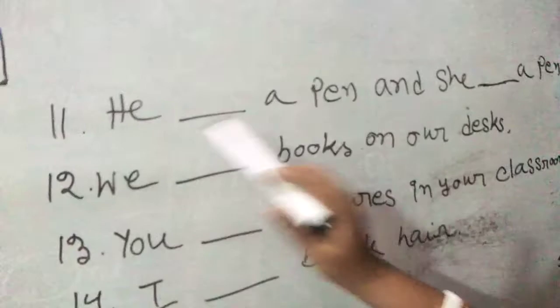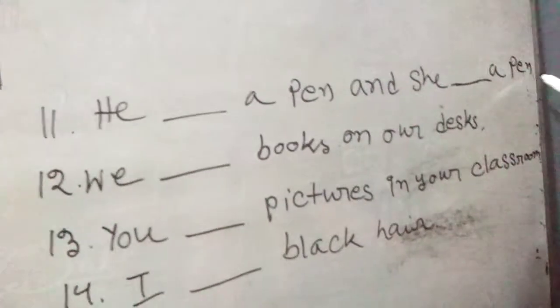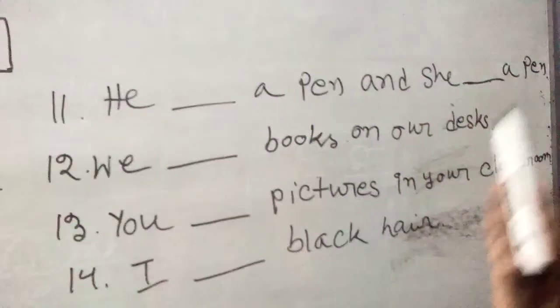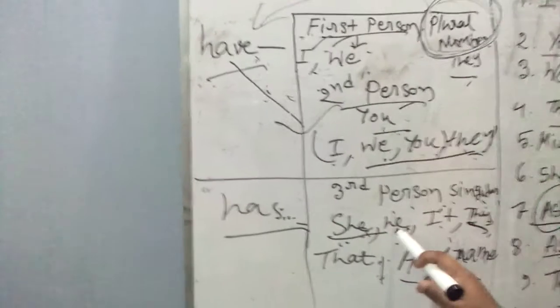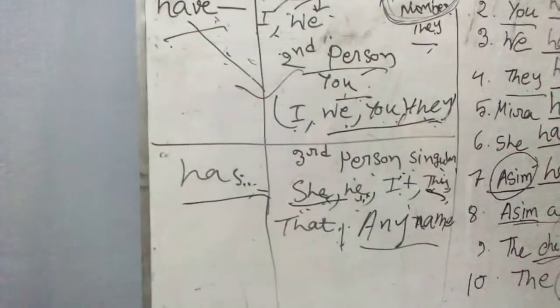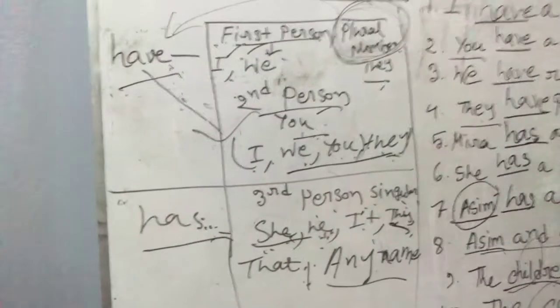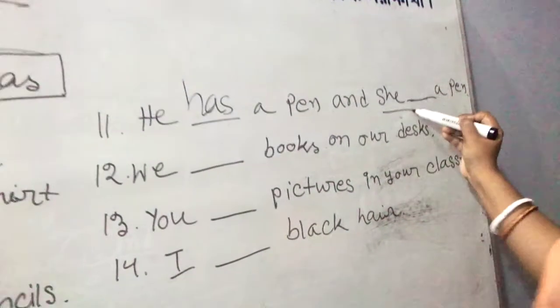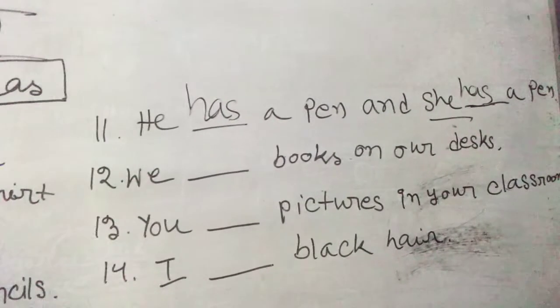Number eleven: 'He ___ a pen and she ___ a pen.' This is the easiest one. He and she — I have shown you on the board: he, she, this, that and any name use 'has'. After 'he' put 'has', and after 'she' again put 'has': he has a pen and she has a pen.